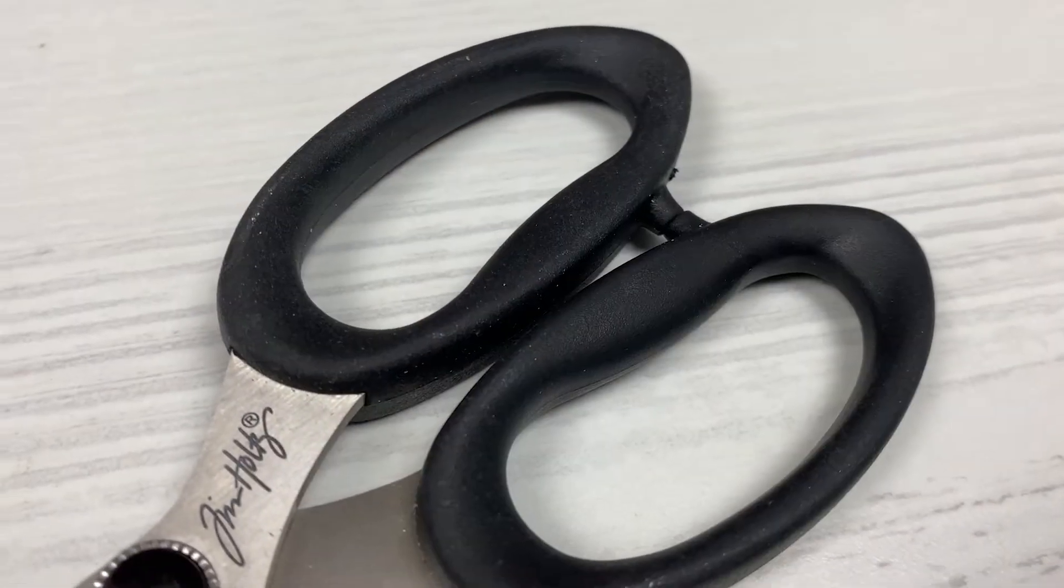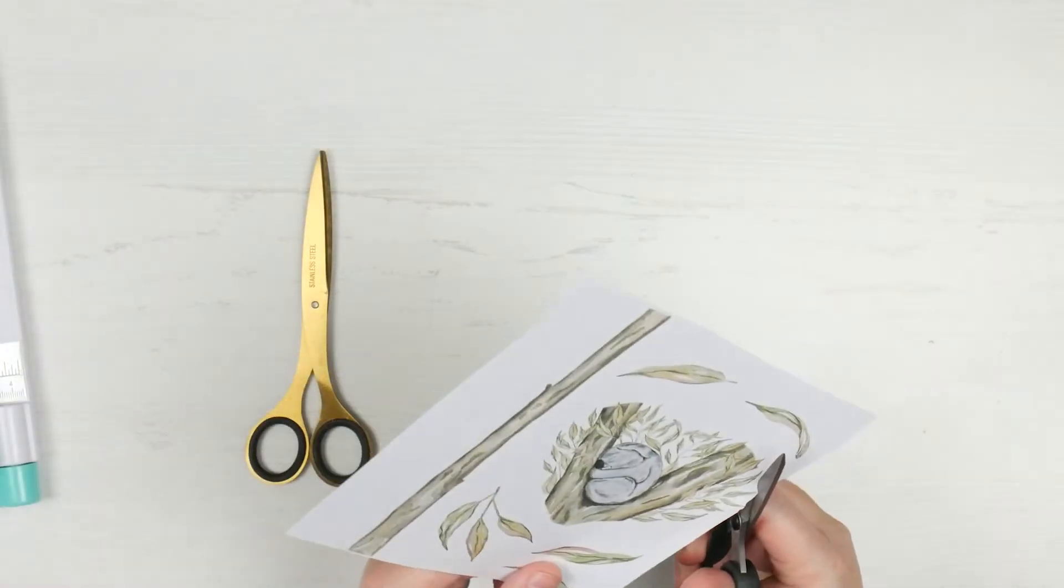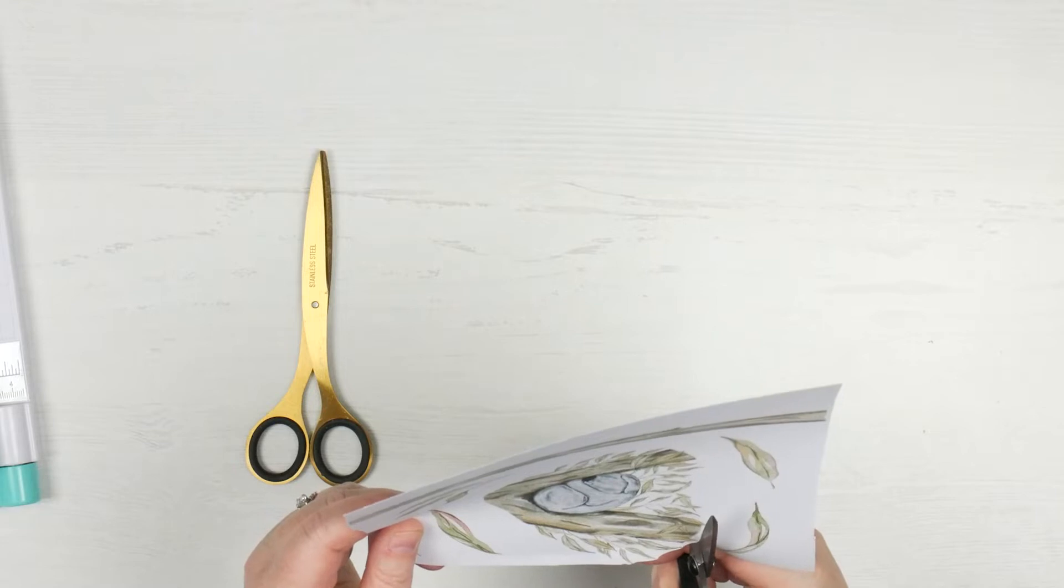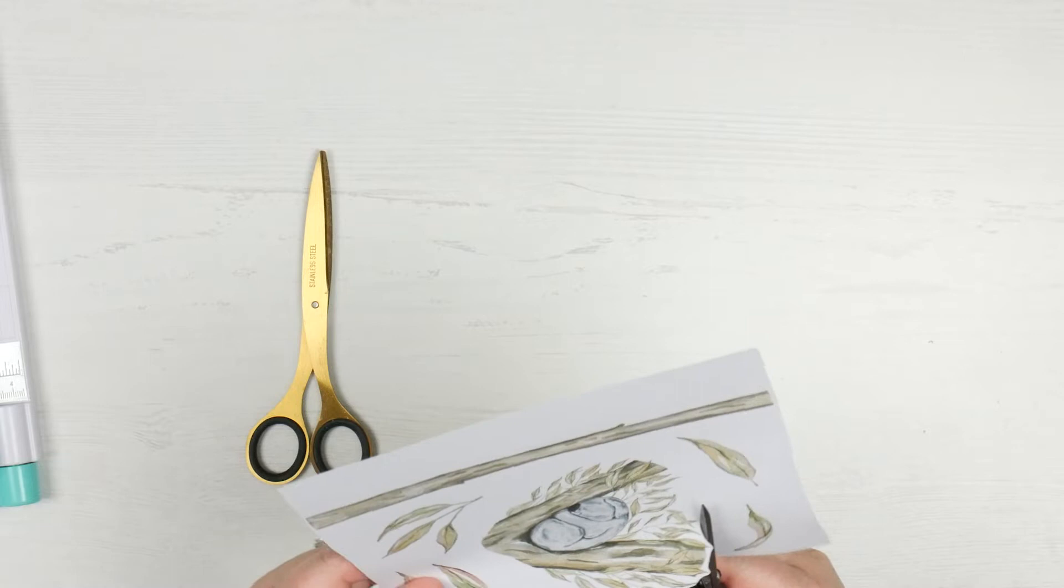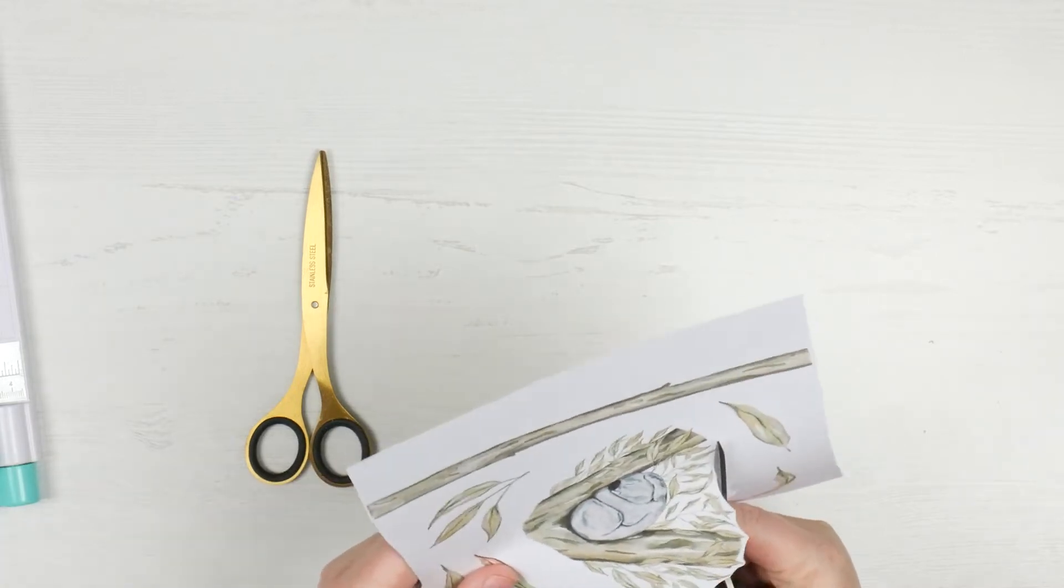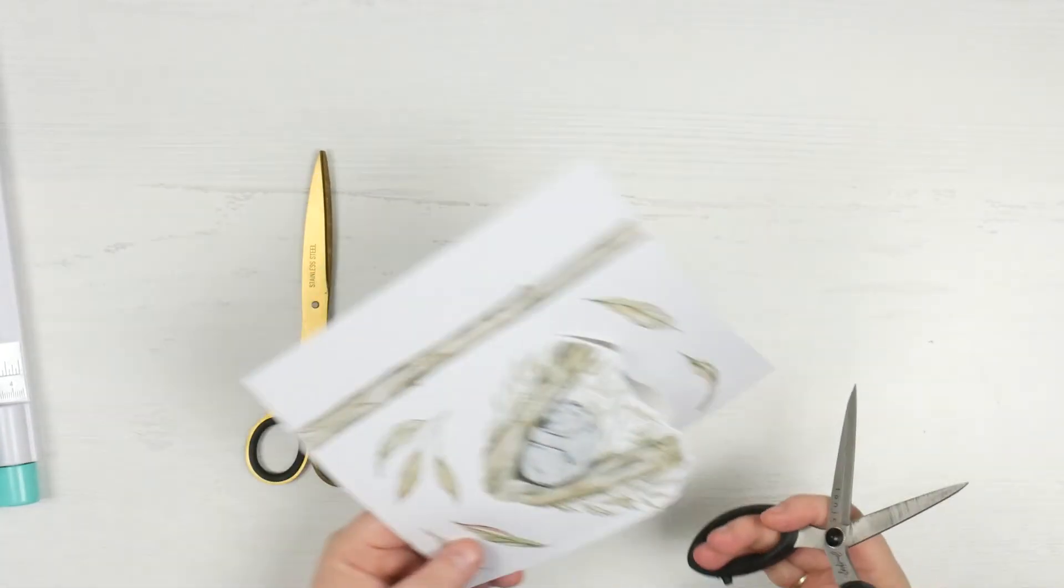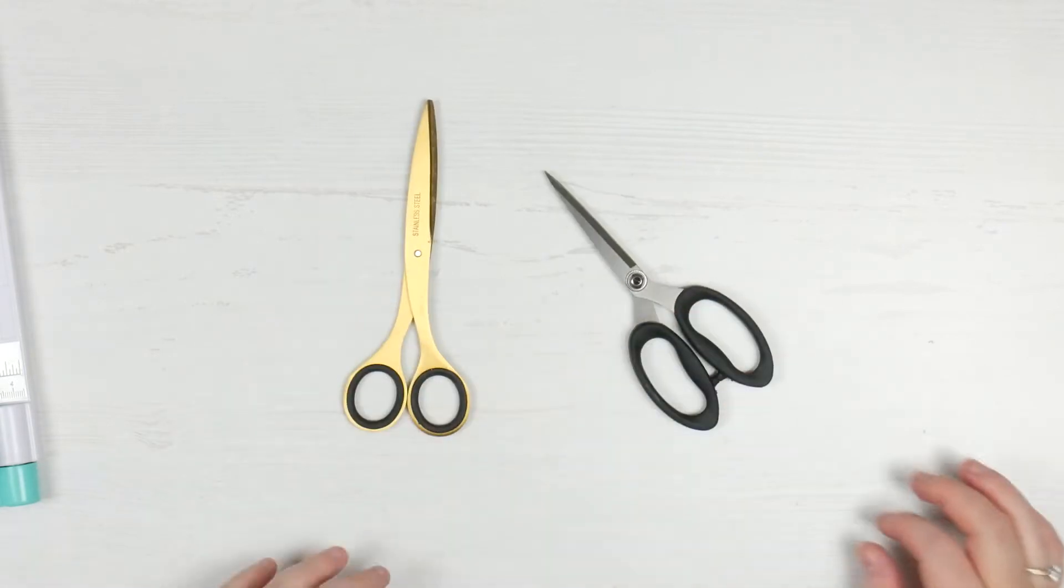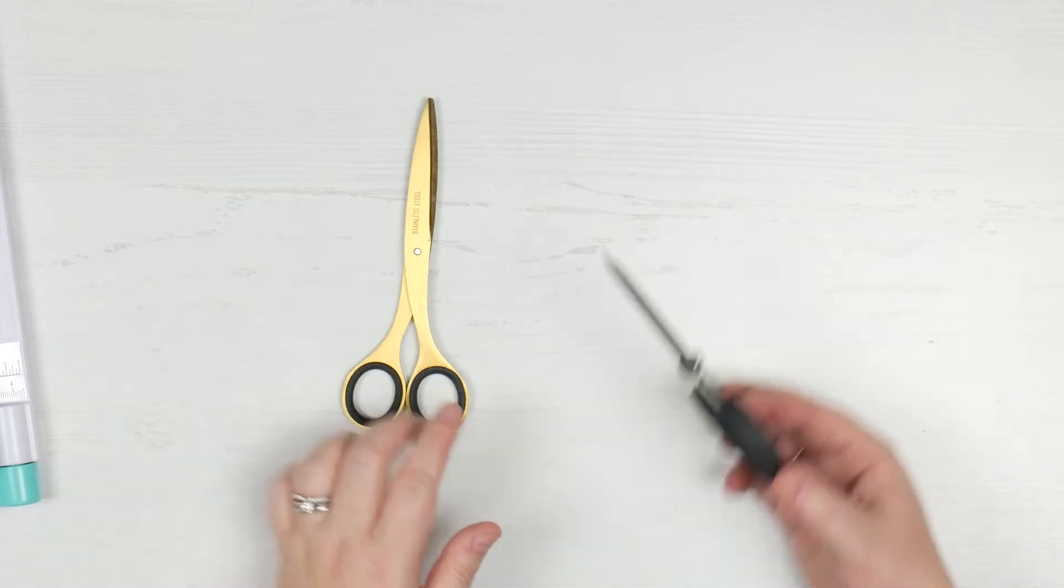This is a Planners Anonymous printable, and a fussy cut is anything where you hand cut the image out. What has happened in the technology of the world is that you have now got dies and cutting machines that can do this for you if you don't enjoy it. I actually kind of like fussy cutting.